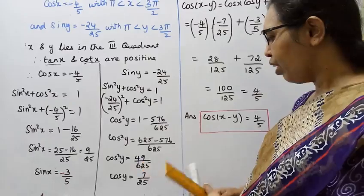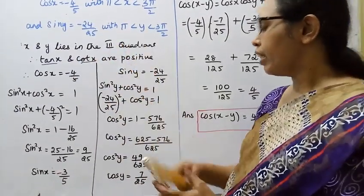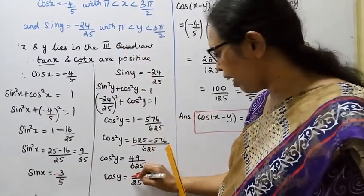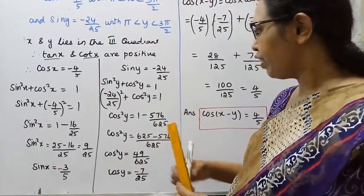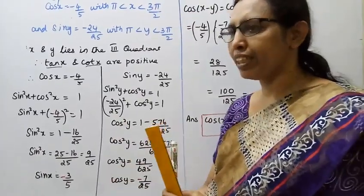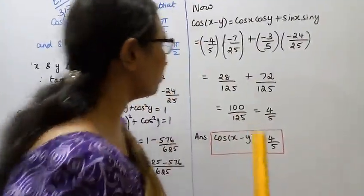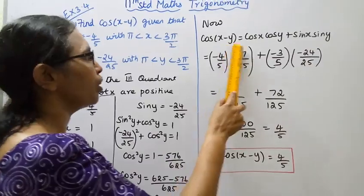Square root of 49 is 7, square root of 625 is 25. Since tan x and cot x are positive in the third quadrant while cos is negative, cos y equals minus 7 by 25. This approach gives us both speed and accurate calculation.